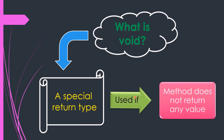Void is used when the method does not return any value. If a method returns no value, then it has no data type for that return value. That is exactly why void exists as a special return type — it indicates that the method will not have any return value, but still serves as the return type placeholder in the method declaration.